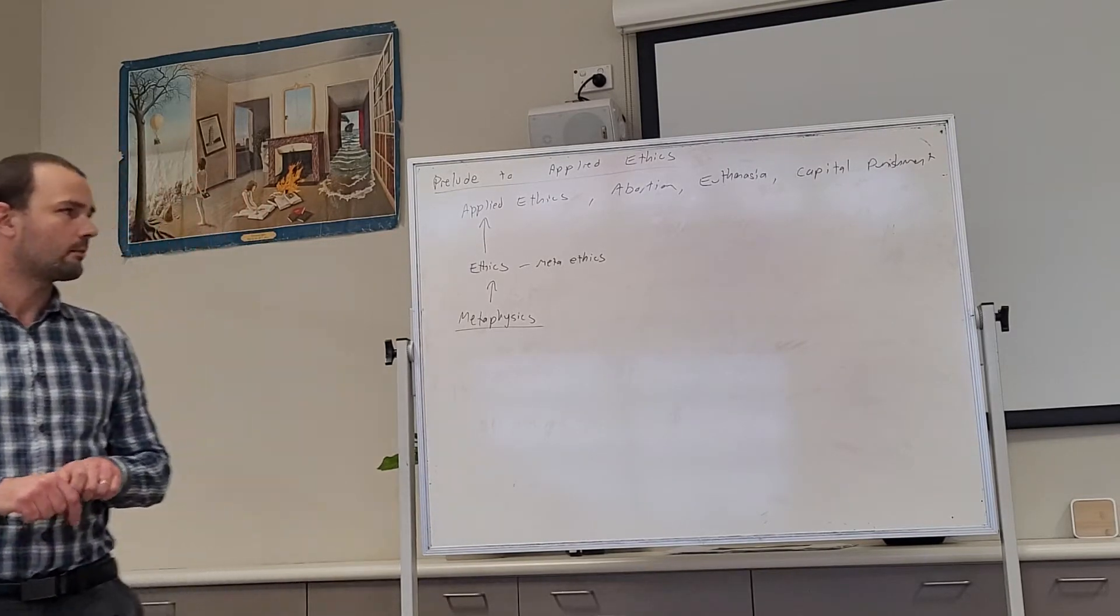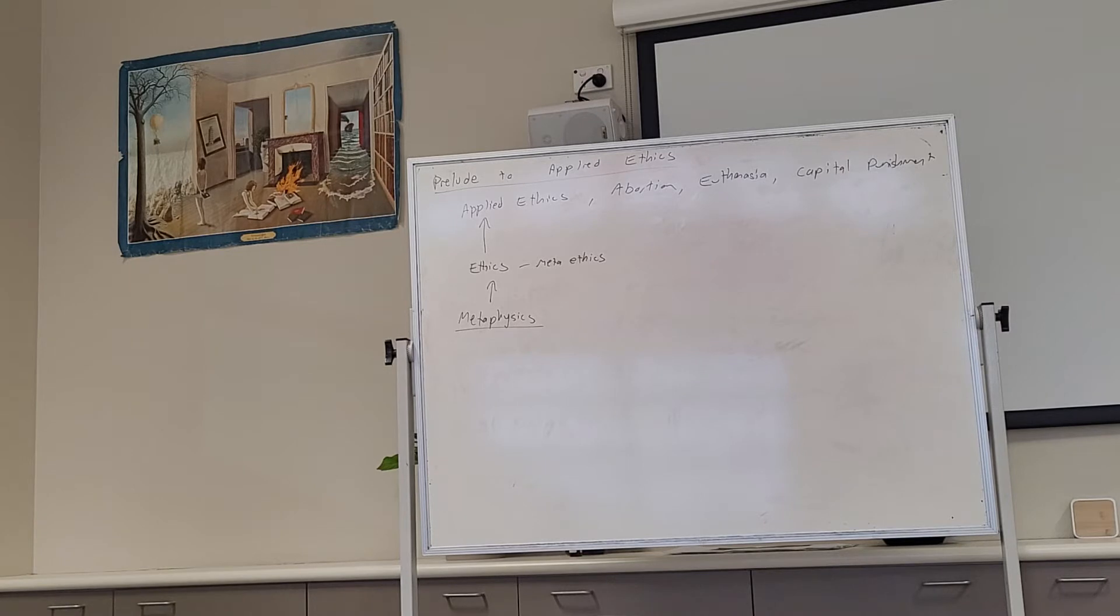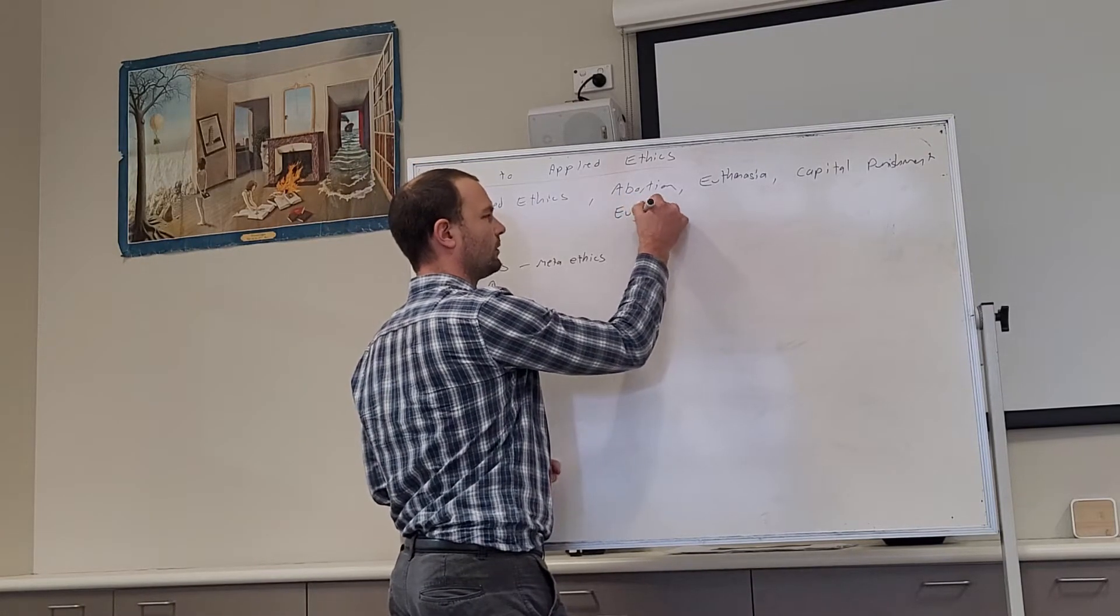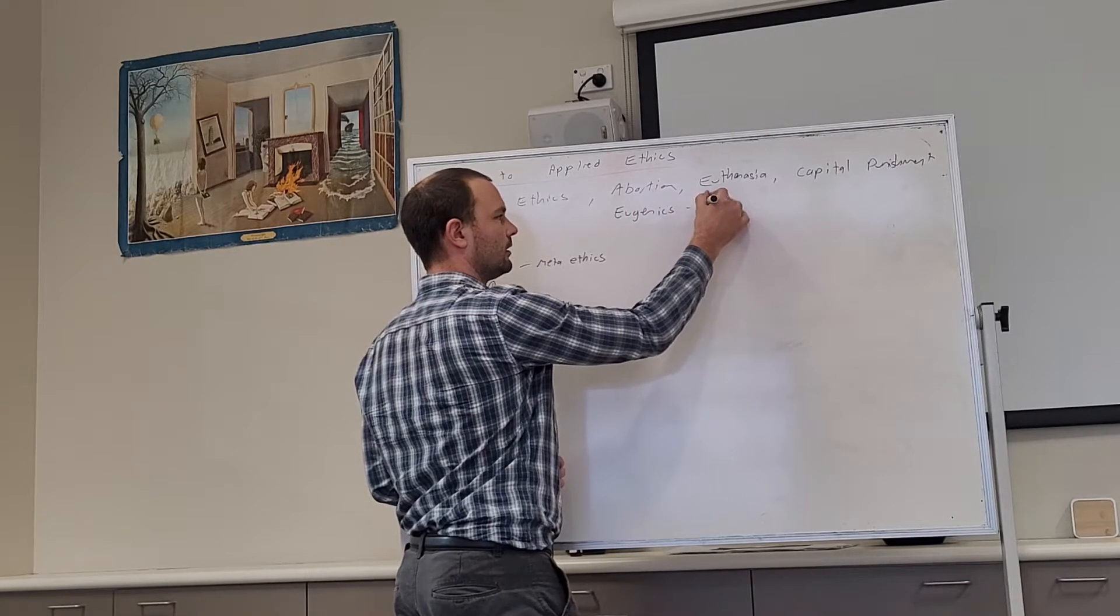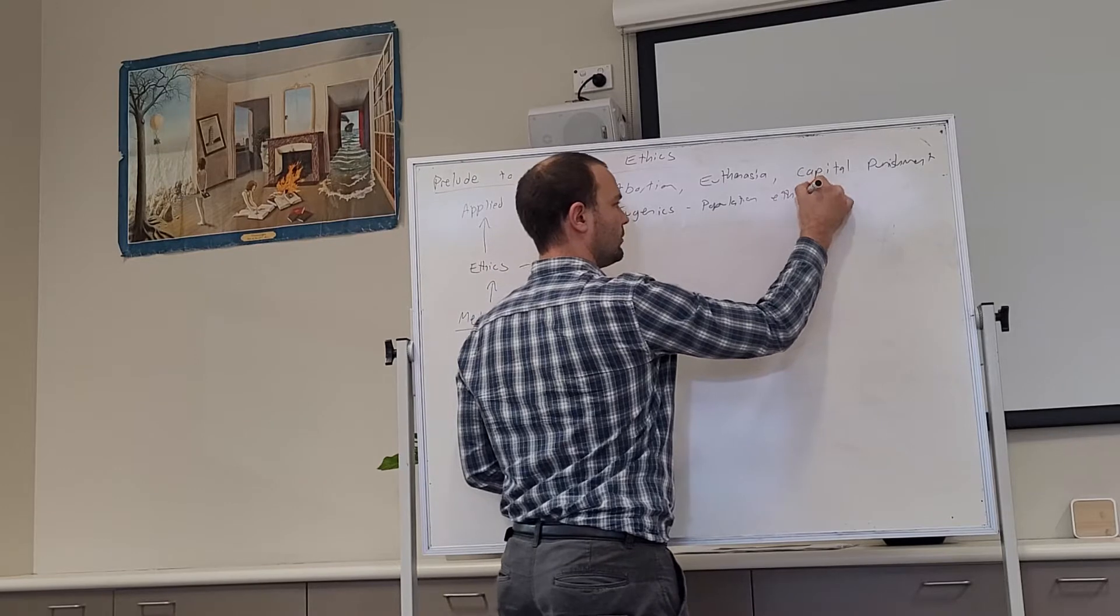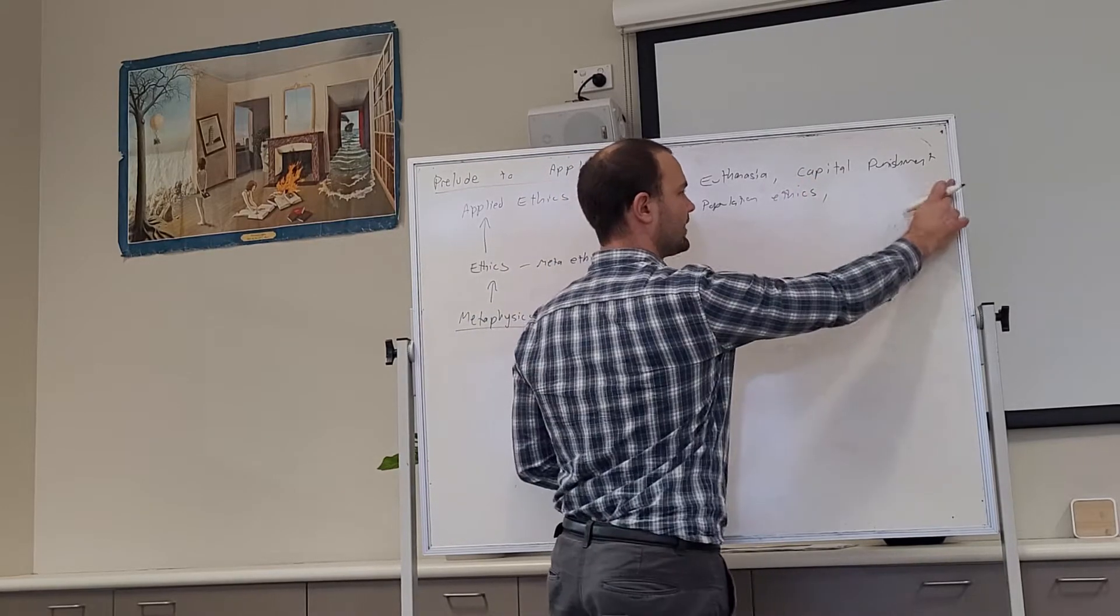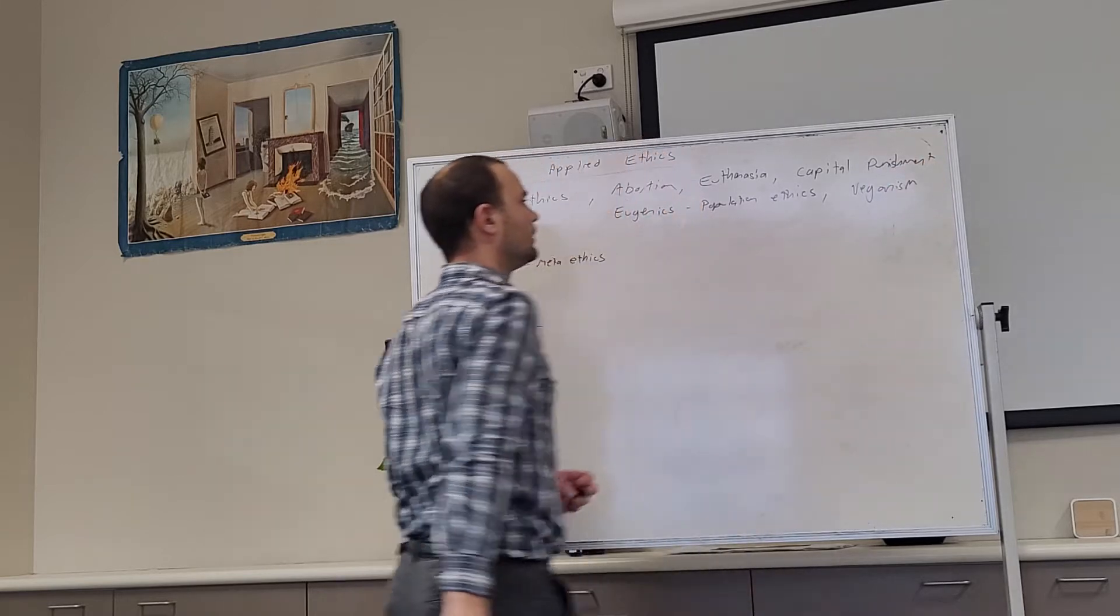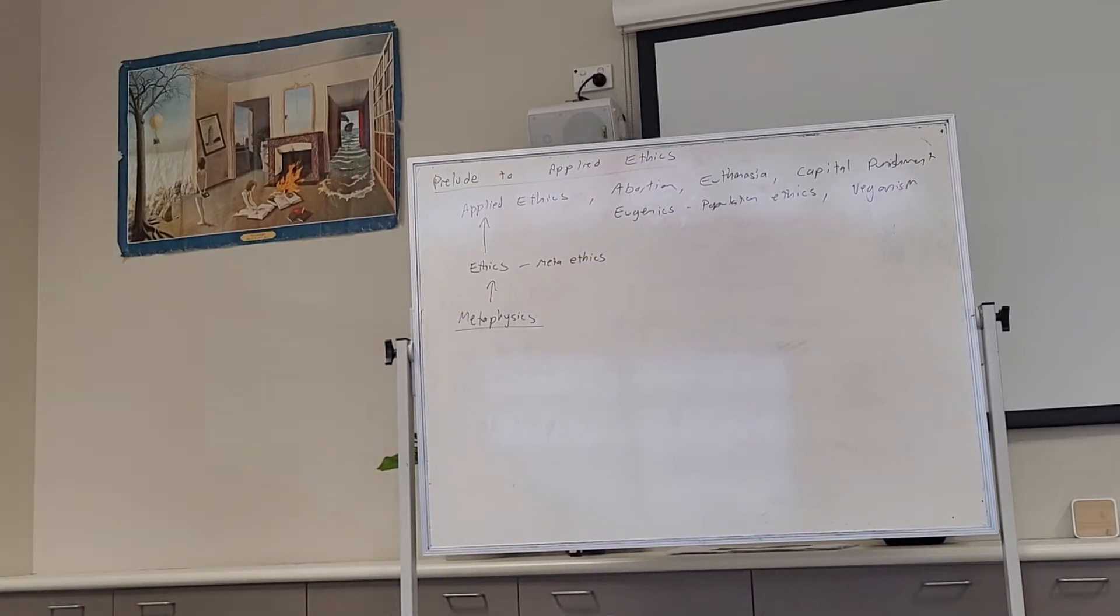Abortion, euthanasia, capital punishment. What else? Eugenics, I think. Eugenics and other, we call them population ethics. In here we have veganism, that's the other one, we're talking about animal lives. These are all examples of ethical issues. And out of that, you get political theory and so forth.